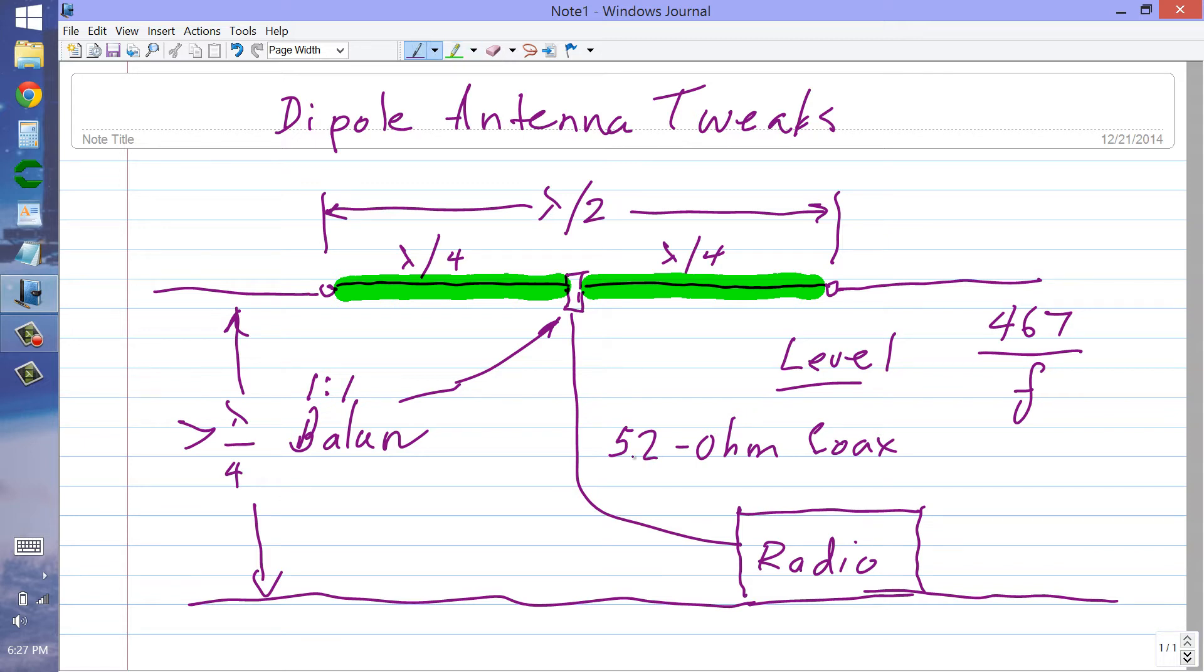So if you have an SWR meter and you're really uptight about getting your SWR minimum at the frequency of choice, which by the way would be expected to be about 1.4 to 1, because this is a 73-ohm impedance right here, purely resistive, 52-ohm coax.